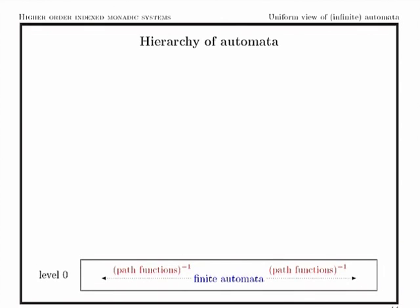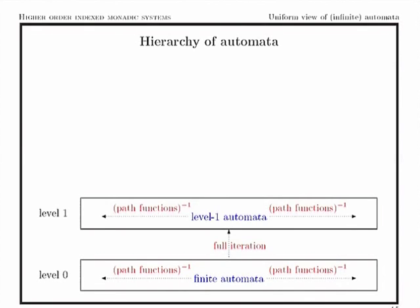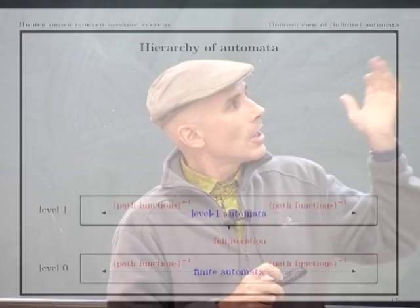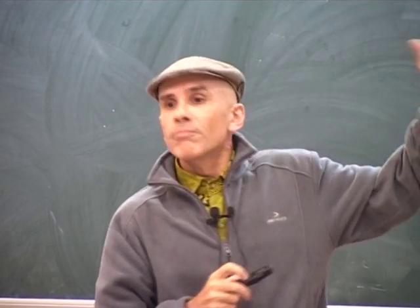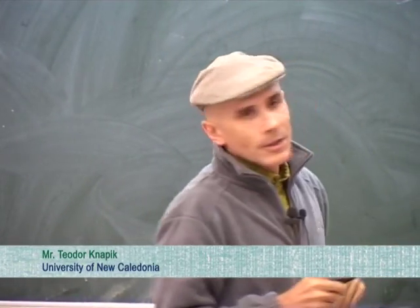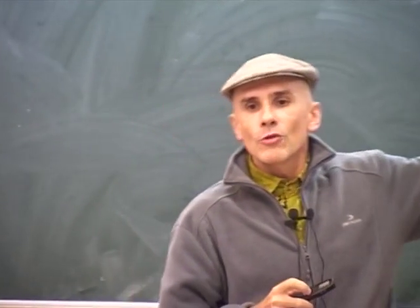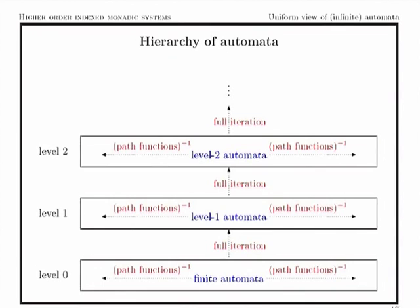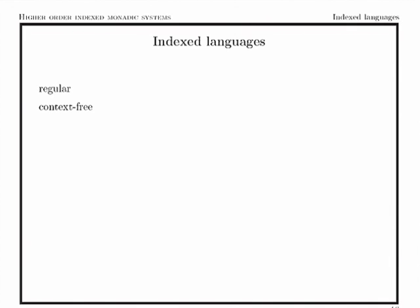We use these operations to consider a hierarchy of this simple model of automata as relational structures. At the basic level zero we have finite structures, and we climb up in the hierarchy using full iteration. At each level we close under the inverse path functions, which correspond to a restricted monadic singular interpretation. This hierarchy is infinite, it is strict, and it may also be defined using unfolding instead of iteration, with other similar operations — so there are many variants.